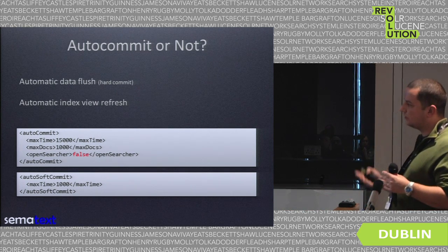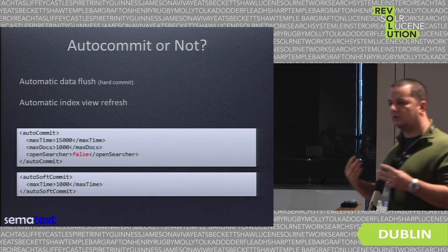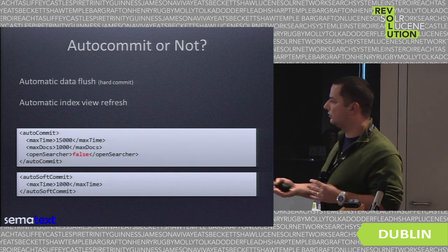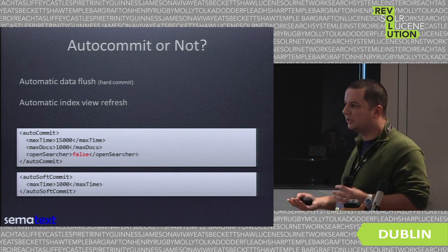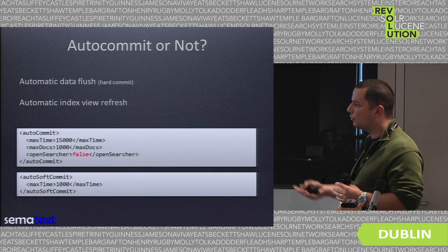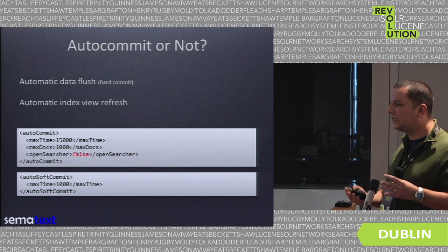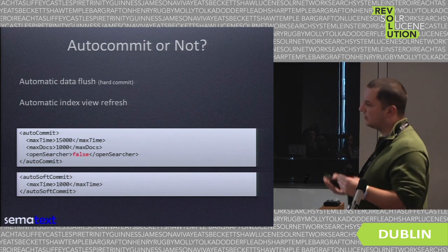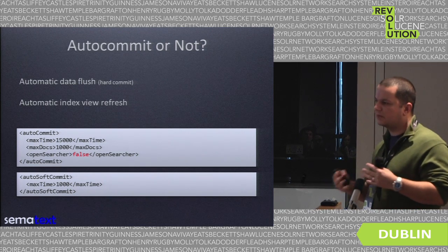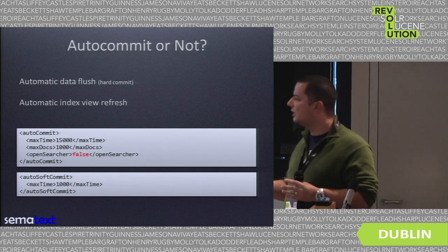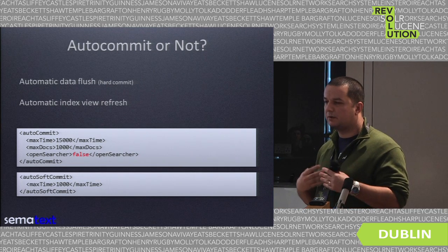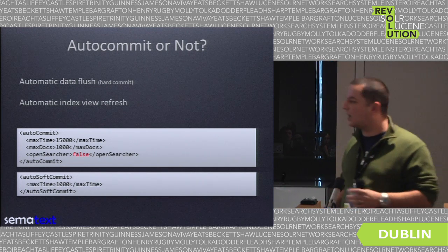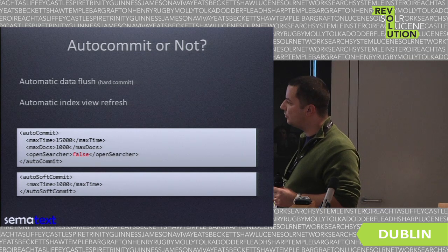You usually want data available for searching right away — at least within a second or maybe 10 seconds after being sent to Solr. However, you have to choose the right parameters for your system, because not all systems will be capable of a soft autocommit every second. It depends on your query rate and your indexing rate, and it's good to have monitoring to see what your cloud deployment is capable of.